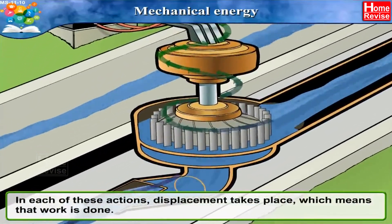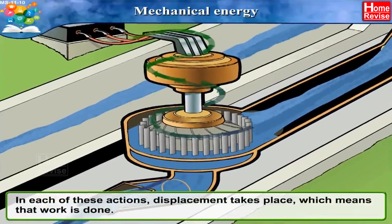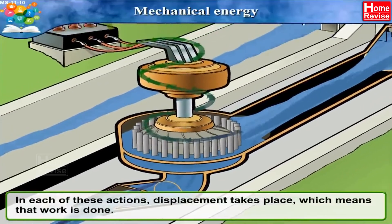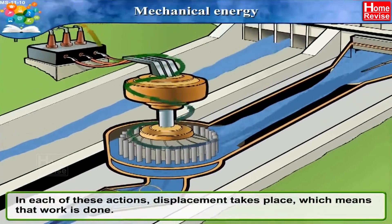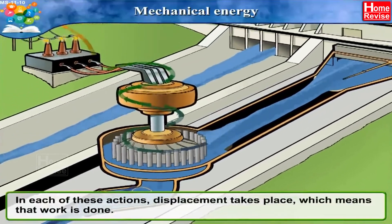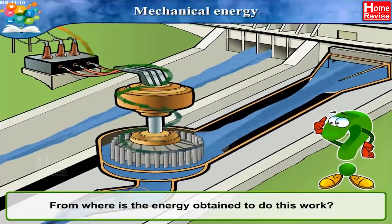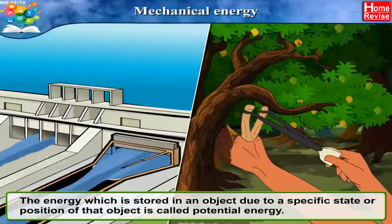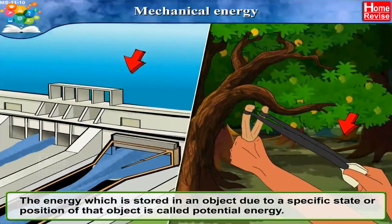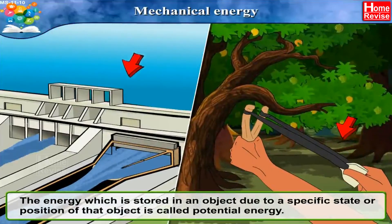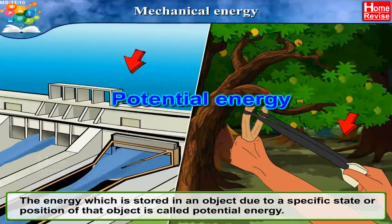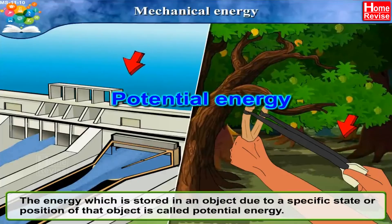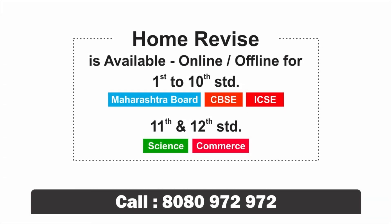In each of these actions, displacement takes place, which means that work is done. The energy which is stored in an object due to a specific state or position of that object is called potential energy.